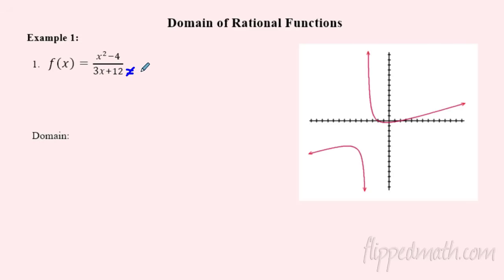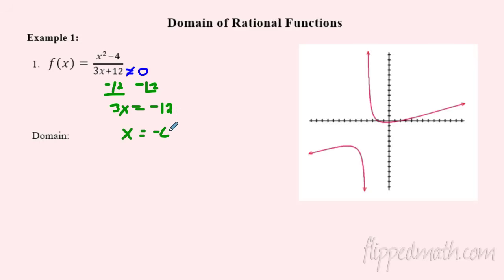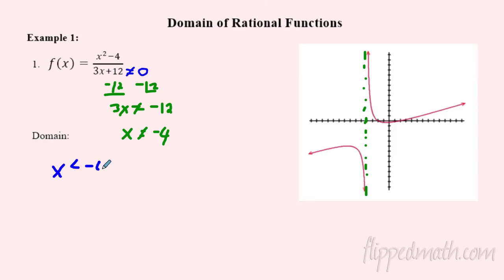All you have to do is say you cannot divide by zero, so you just solve the denominator equal to zero. Subtract 12, divide by 3 — x cannot be negative 4. You can see that on the graph: if you go to x equals negative 4, there's a break in the graph, no function there, because you can't divide by zero. So the domain excludes negative 4.